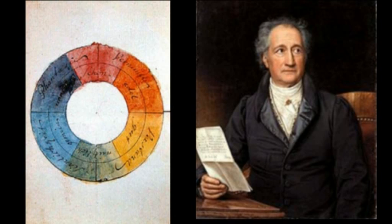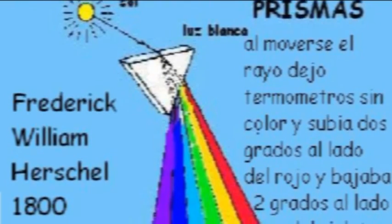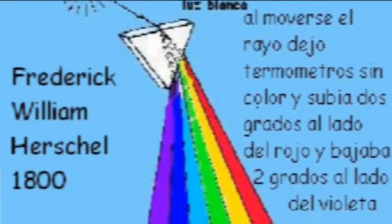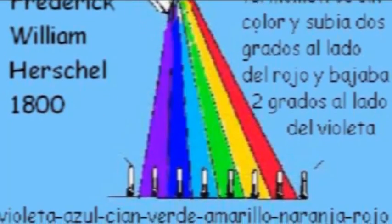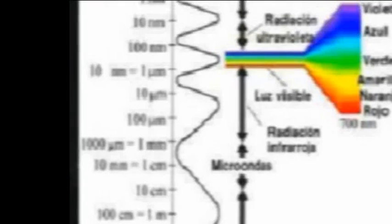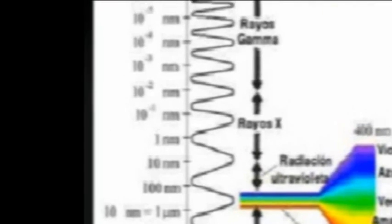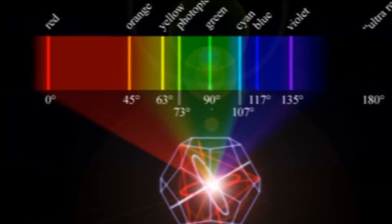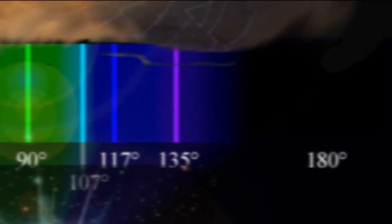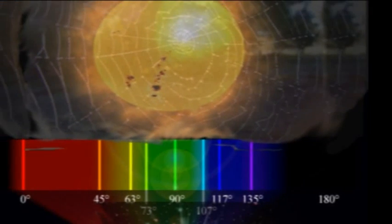Johann Goethe gave us the meaning between the shadows and light — the shadows that border all the colors. Then we have Herschel, who in 1800 tried to measure the different temperatures of colors, and instead found that where there was no color from the rainbow, the temperature would go up two degrees, which was infrared, or down two degrees, which was ultraviolet. That gave us the whole electromagnetic spectrum.